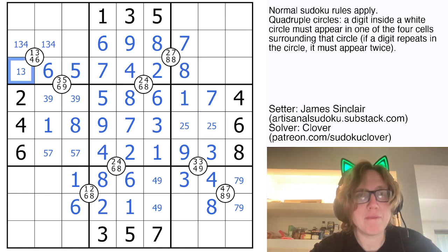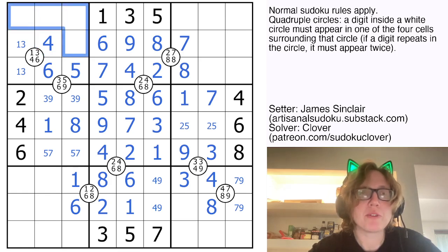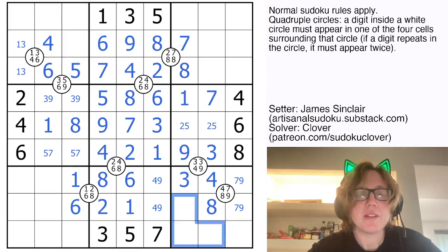This can't be a four. This also can't be a four because of the four in the column, so that will now be a four. What do we need in these corner regions still? So here we still need one, two, five, and six.